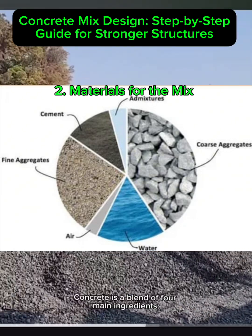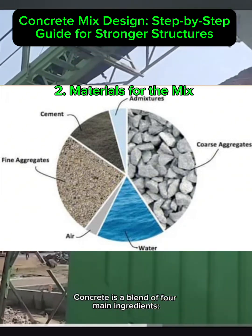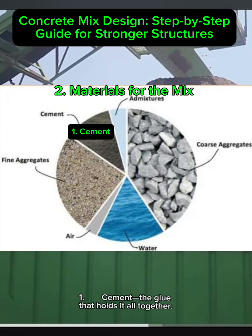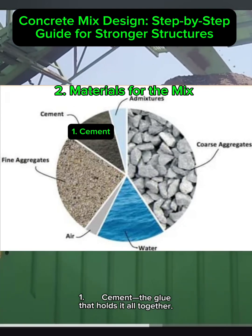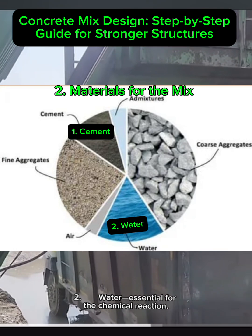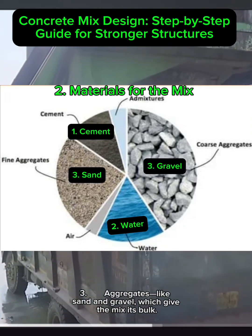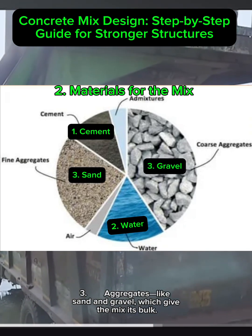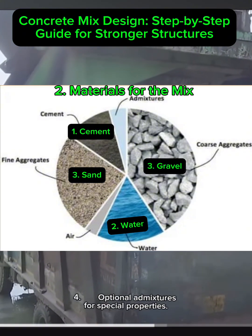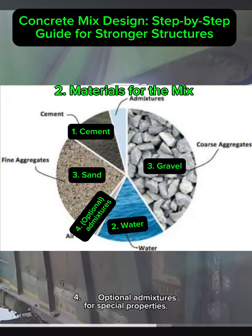Step 2: Materials for the mix. Concrete is a blend of four main ingredients: cement, the glue that holds it all together; water, essential for the chemical reaction; aggregates like sand and gravel, which give the mix its bulk; and optional admixtures for special properties.